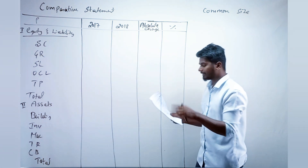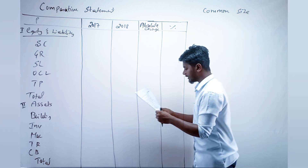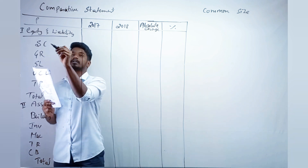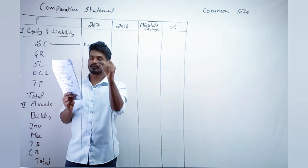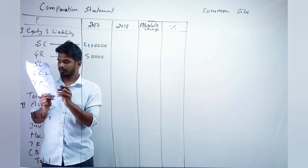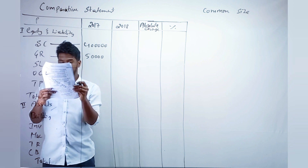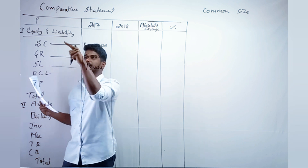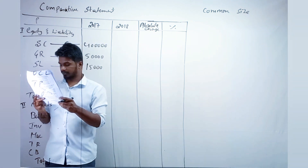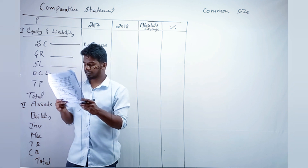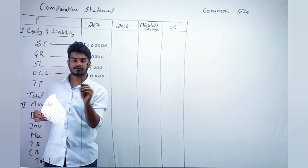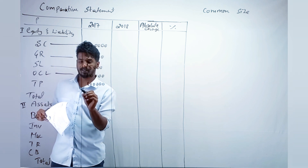Now write the amounts for 2017 in the first column. Share capital is 4 lakh, general reserve is 50,000, secured loans is 15,000. Don't scratch out in the exam — I'm just adjusting alignment here. Other current liabilities is 10,000 and trade payable is 40,000.